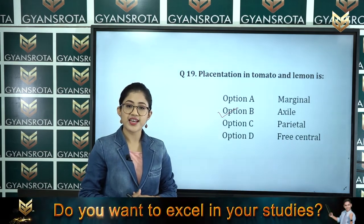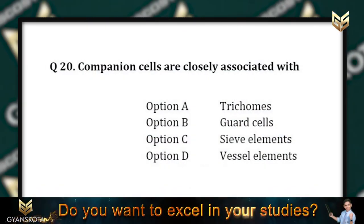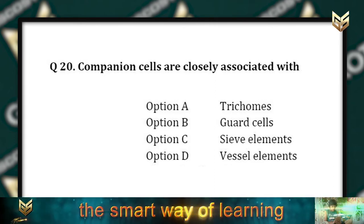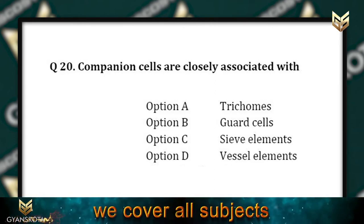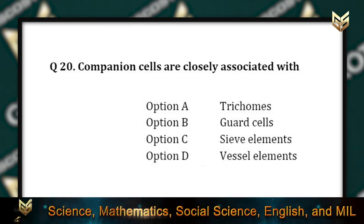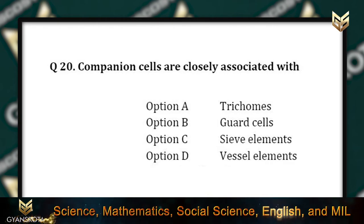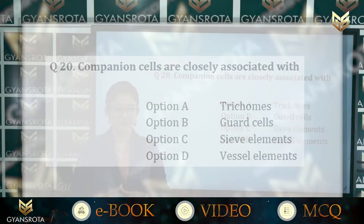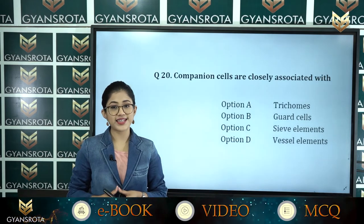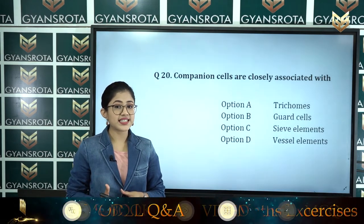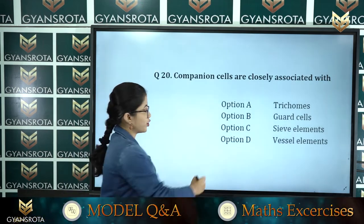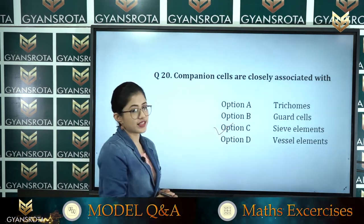Question number 20: Companion cells are closely associated with — option A trichomes, option B guard cells, option C sieve elements, option D vessel elements. This is from the chapter Anatomy of Flowering Plants. The correct answer is sieve elements, so option C is the correct answer.